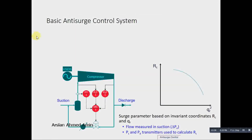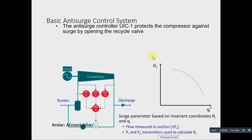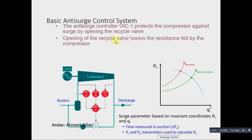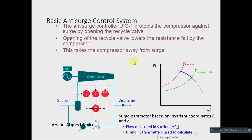This is how the basic anti-surge controller system is demonstrated here. We see QR scale and RC — in this case the RC compression ratio is used, while in the algorithm HR is used. The anti-surge controller protects the compressor against surge by opening the recycle valve. Opening the recycle valve lowers the resistance seen by the compressor, so the resistance decreases, the flow increases, and this operating point moves away from the surge line, taking the compressor away from surge.